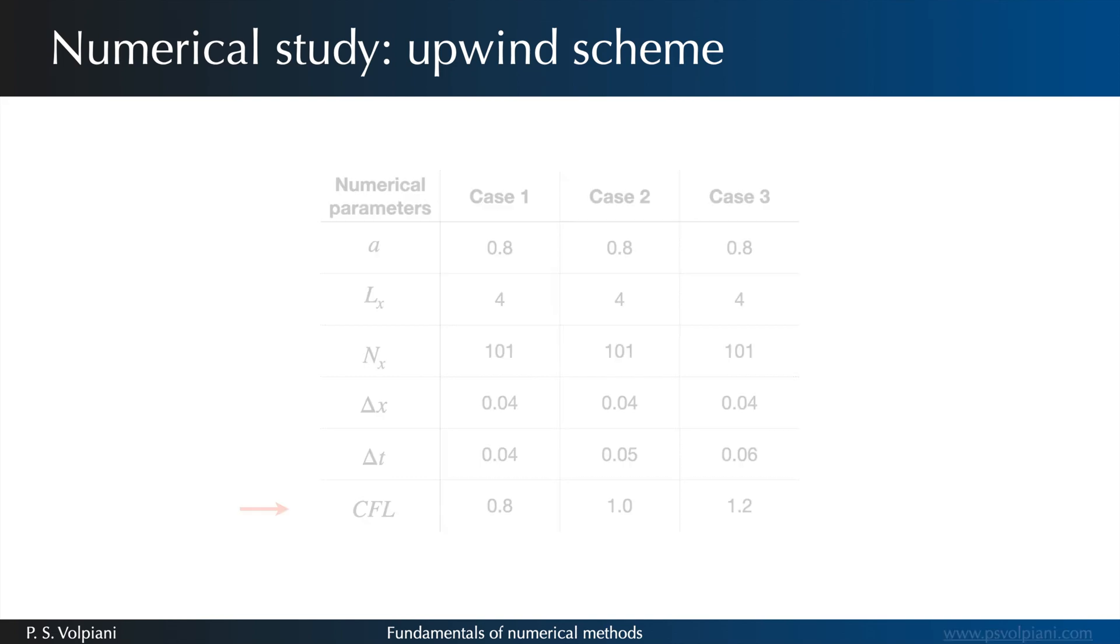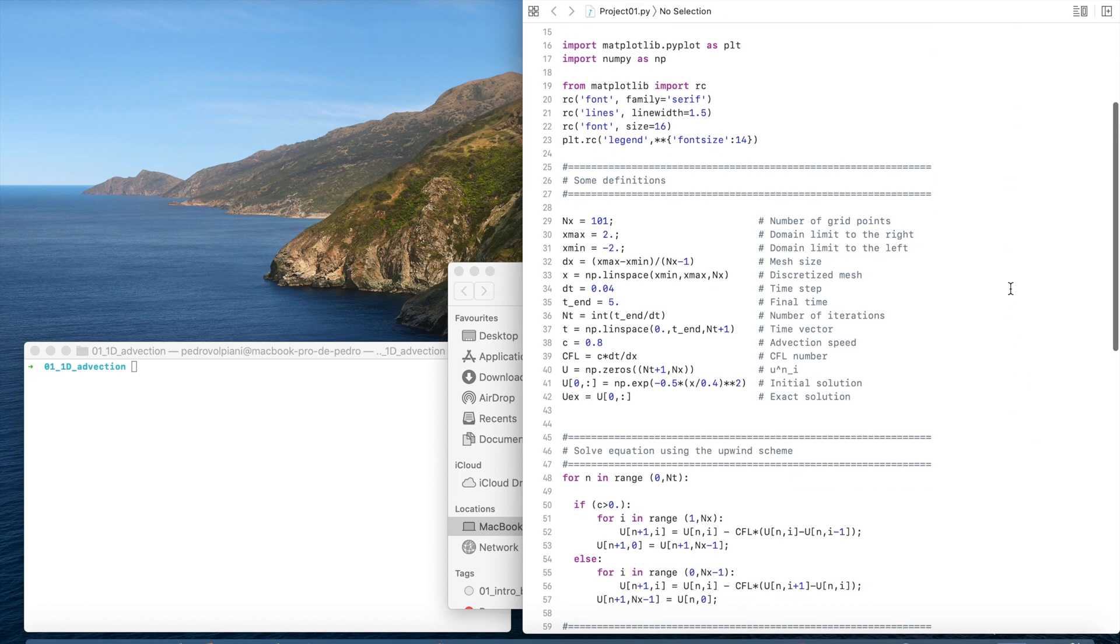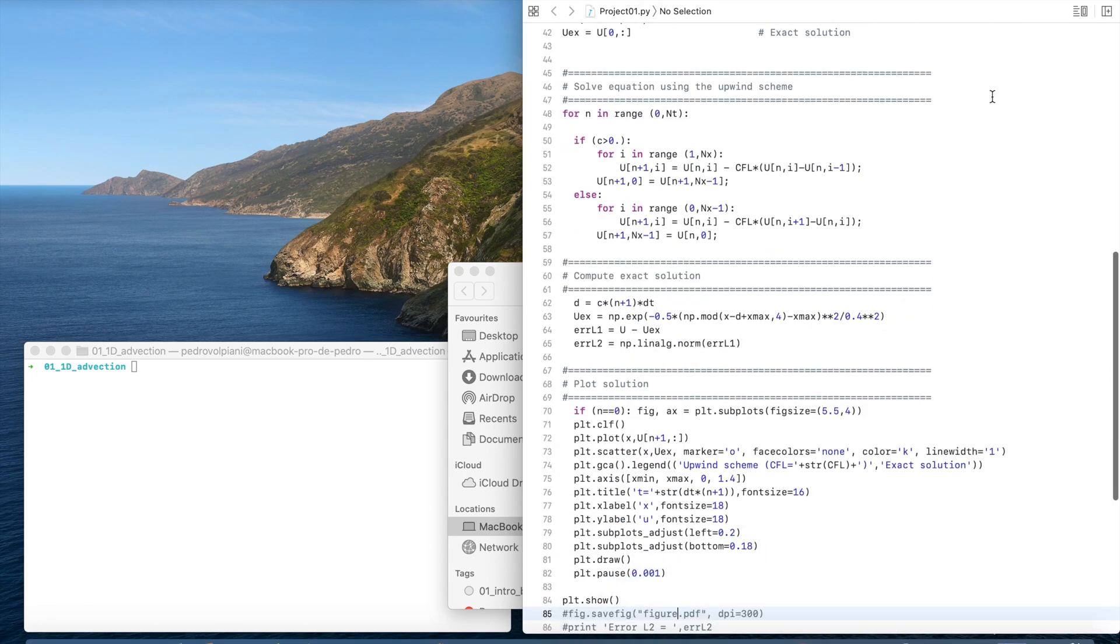Writing the upwind scheme in Python is straightforward. In this program we import some basic libraries, define some parameters, solve for the discretized equation and plot the results.